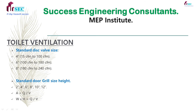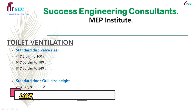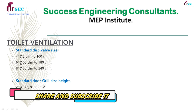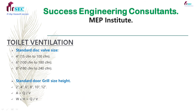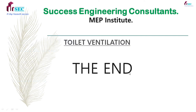A standard disc valve size is 4 inch or 6 inch. A 4-inch disc valve handles 50 CFM to 100 CFM; a 6-inch handles 100 CFM to 180 CFM. If the flow rate is 100 to 180 CFM, then a 6-inch disc valve is selected. Standard door grill sizes are 12 inch by 4 inch and 12 inch by 12 inch. Now we will see the drafting and designing in AutoCAD.